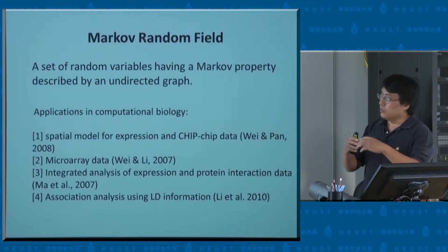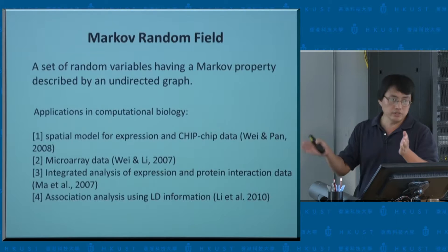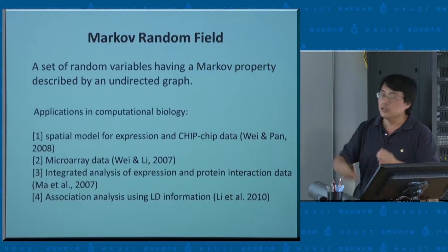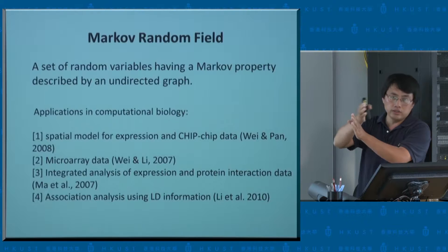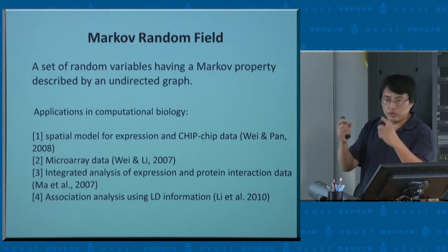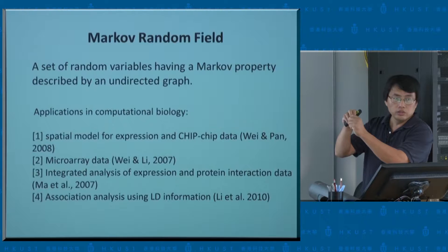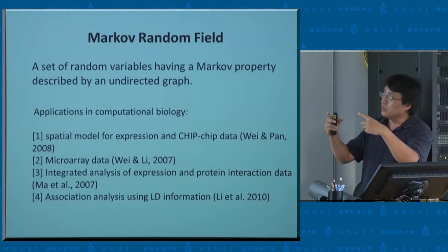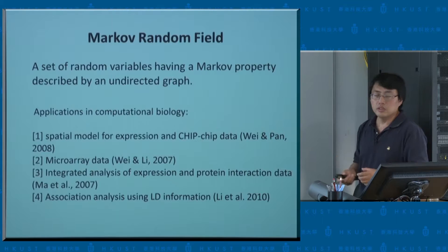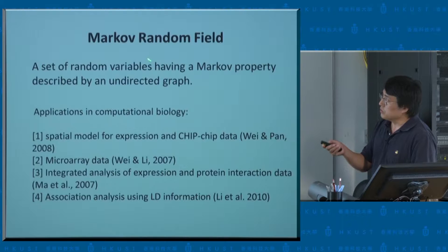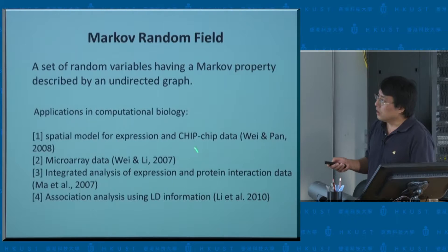The Markov property essentially means that for any random variable, there are neighbors. In the Markov chain context, there's a thing before or after. In the Markov random field context, given its neighbors, the value or state of a random variable is independent of anything else — that's the Markov property. It's a very first-order dependence property, very straightforward. Markov random fields have been applied in other contexts beyond the three applications I'm going to talk about today.